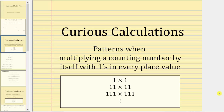Welcome to a video on curious calculations. In this video, we will look at a pattern when multiplying a counting number by itself with ones in every place value — for example, one times one, 11 times 11, 111 times 111, and so on. Let's take a look.